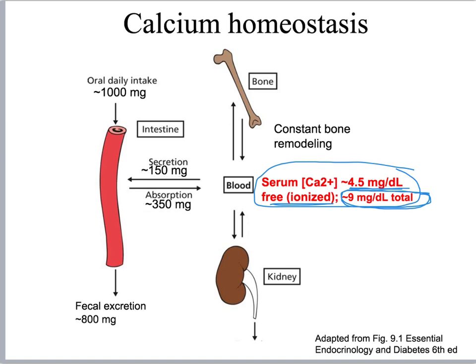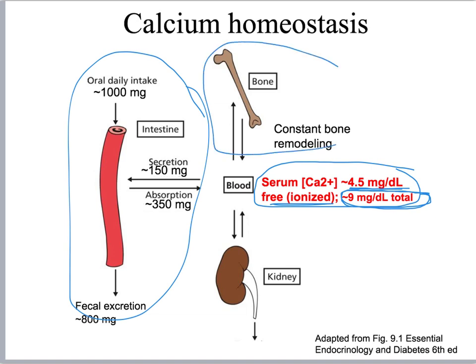The major ways that free serum calcium is regulated are through how much is absorbed in the intestine versus secreted back out into the intestine, how much bone remodeling occurs, and how much is excreted by the kidney.